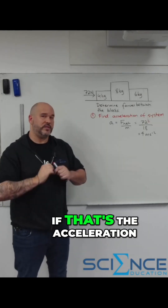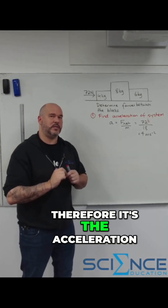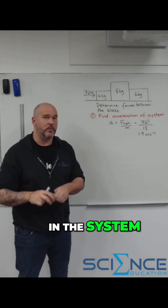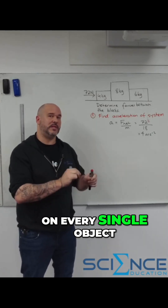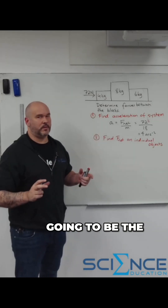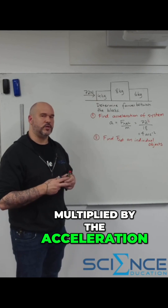If that's the acceleration of the system, therefore it's the acceleration of every single object in the system. We can now find the net force on every single object, which is simply the mass of the object multiplied by the acceleration of 4.